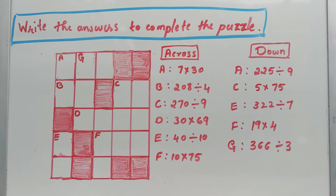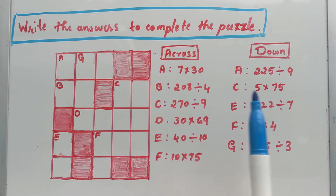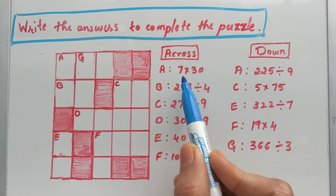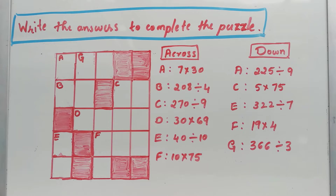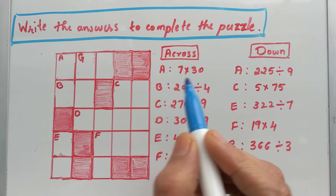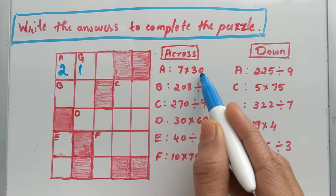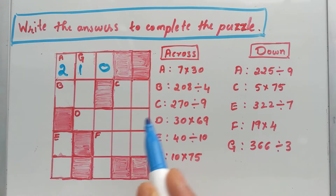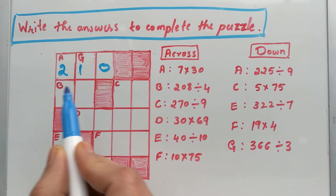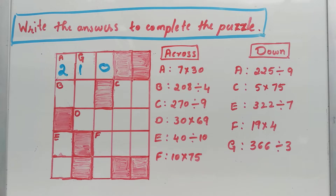Hello kids, let's solve some puzzles today. This puzzle has both multiplication and division. Across is given first: A is 7 times 30. Simple multiplication — what is 7 times 3? That's 21. There's one zero, so just multiply the numbers first then count zeros. 7 times 30 is 210.